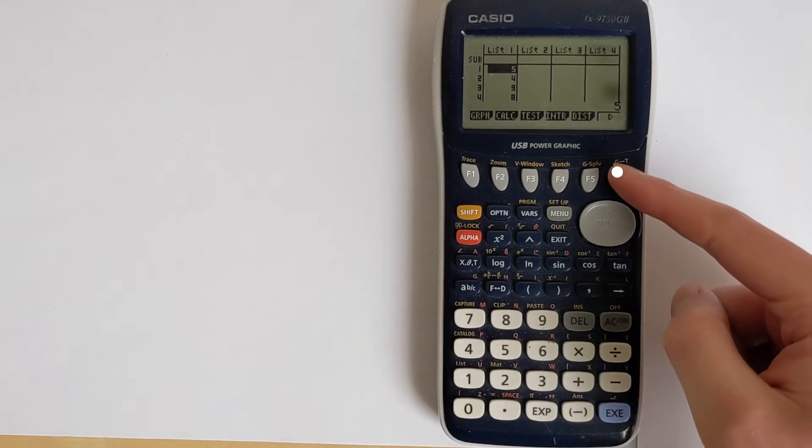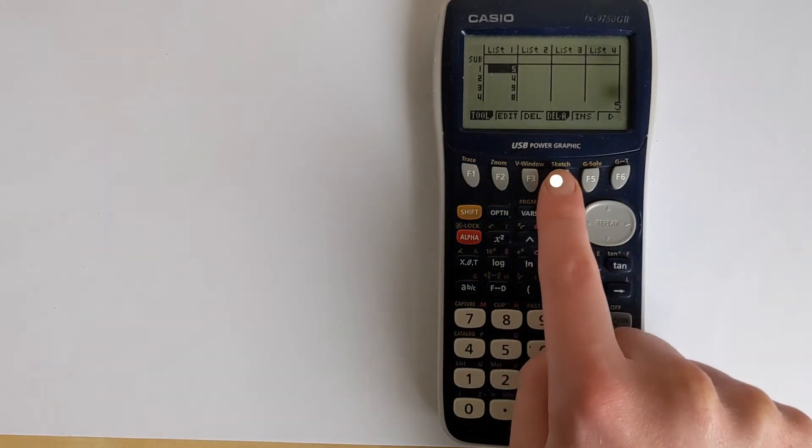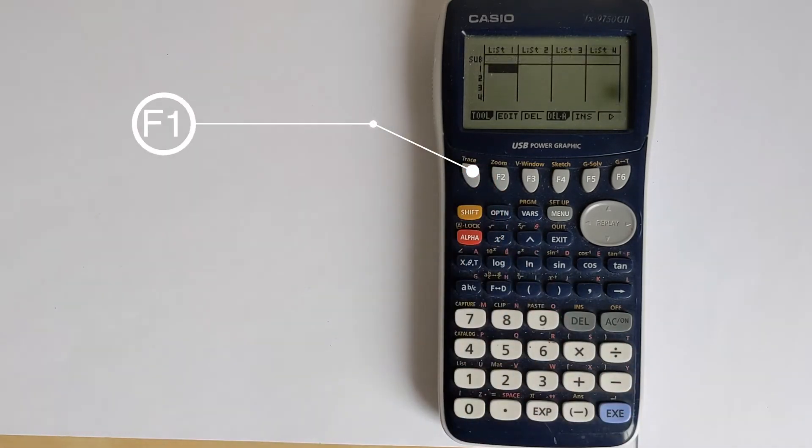Press F6 to go to next, and then you've got this option here on button F4. Let's delete all, so press F4, and then F1 will delete everything there.